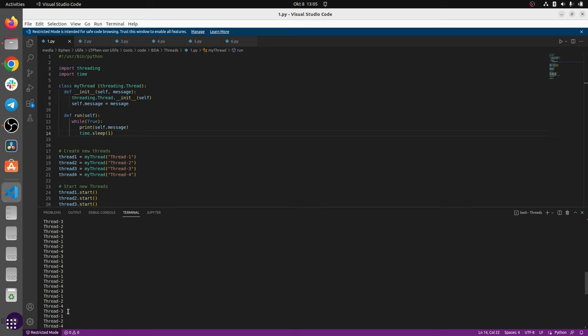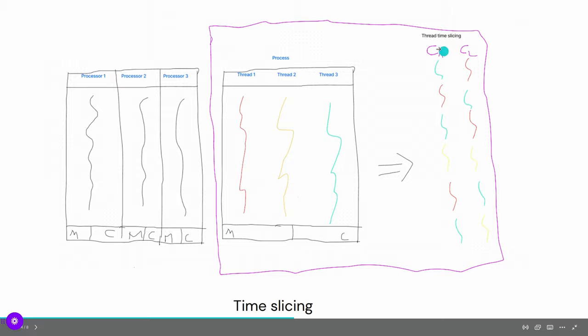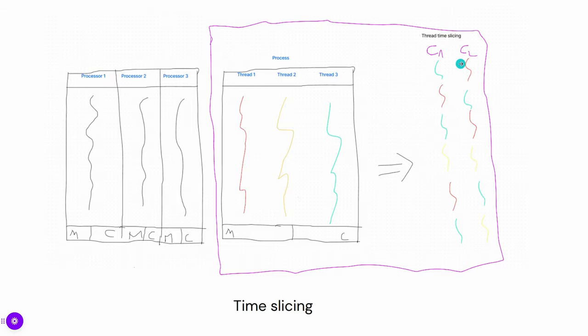If we stop the process, you will see outputs like one, two, four, three, three, one, two, four — going in any direction depending on how the operating system scheduler attributes which thread to which core at which moment. We can also have multiple threads on multiple cores as explained, but they are not being executed at exactly the same time. They're just chunks being executed at a given time, swapping to the next chunk at the next time.